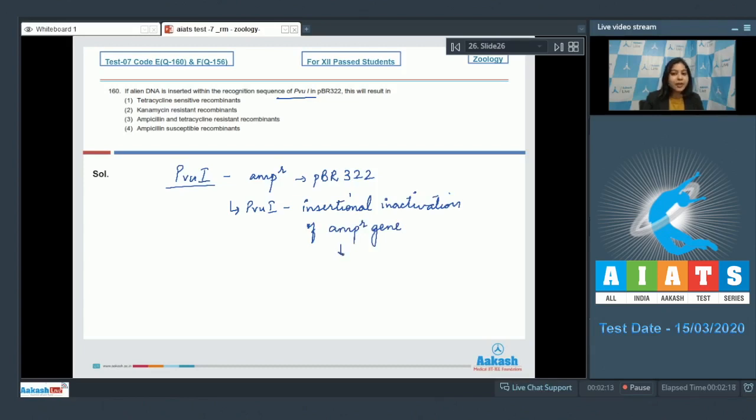Thus the gene will be disrupted and the bacteria will no longer be resistant to ampicillin. That is, the bacteria is going to become sensitive to ampicillin. When the bacteria becomes sensitive to ampicillin, it will die in the presence of ampicillin.